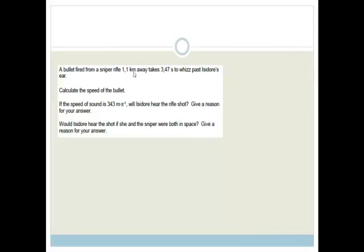It says, a bullet fired from a sniper rifle one kilometer away takes 3.4 seconds to whiz past Isidore's ear. Calculate the speed of the bullet. Okay, so we're going to assume that the bullet hasn't been slowing down at all and is traveling at a constant velocity, and we know, therefore, that velocity equals change in displacement over change in time.